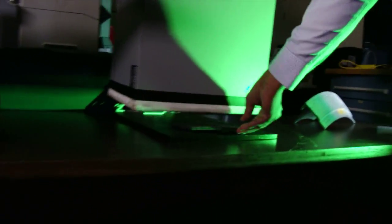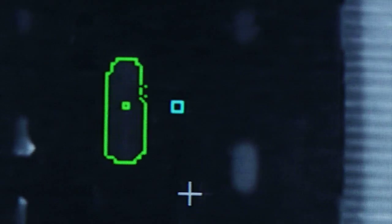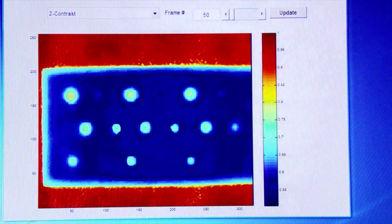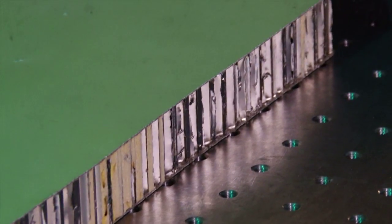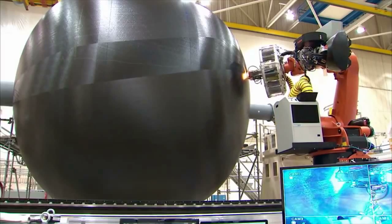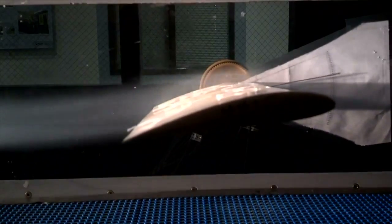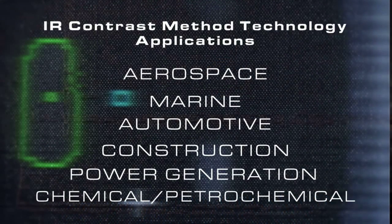Flash infrared thermography using NASA's patented IR Contrast Method technology is available for use through a license agreement with NASA. IR Contrast Method technology can analyze and evaluate composite materials used increasingly in the manufacturing of turbine blades, pressure vessels, fuselages, airfoils, and can be applied to a wide range of industries.